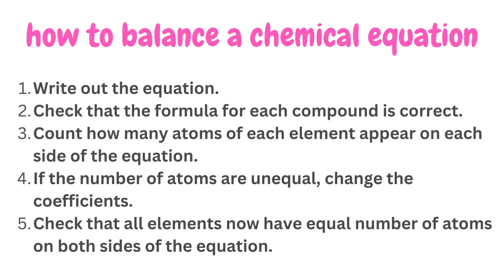Step 1: Write out the equation with reactants on the left of the arrow and products on the right side of the arrow. Step 2: Check that the chemical formula of each compound is correctly written. Step 3: Look at each element, one at a time, and count how many atoms of each element appear on each side of the equation. Step 4: If the number of atoms of a particular element is not the same on both sides, change the coefficients — which are the numbers in front of the molecules — until there are equal numbers of atoms of each element on both sides. Step 5: Run through each element once more and check that all elements have equal numbers of atoms on both sides of the equation.